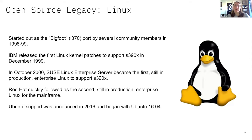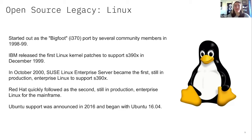A few organizations released Linux versions, but the first one still in production was SLES. SUSE Enterprise Linux Server was the first real enterprise server to support Linux on mainframe, in October 2000. Interestingly, when SUSE came out with this, it was called an enterprise server because it ran on mainframes — they came out with the x86 version and branded it the same way several months later. So I like to say that x86 is actually the SLES port. Red Hat came out soon after, and Ubuntu support eventually came along in 2016, beginning with the 16.04 release.